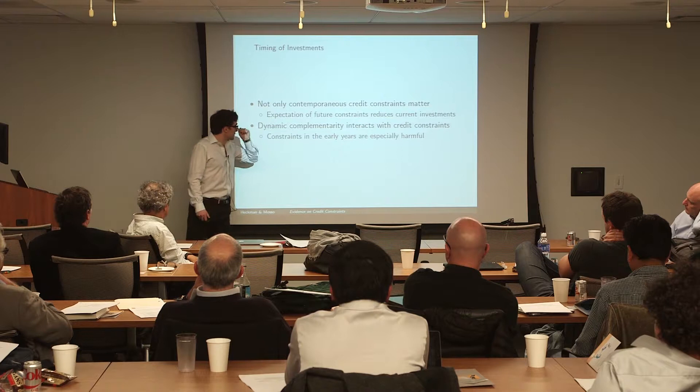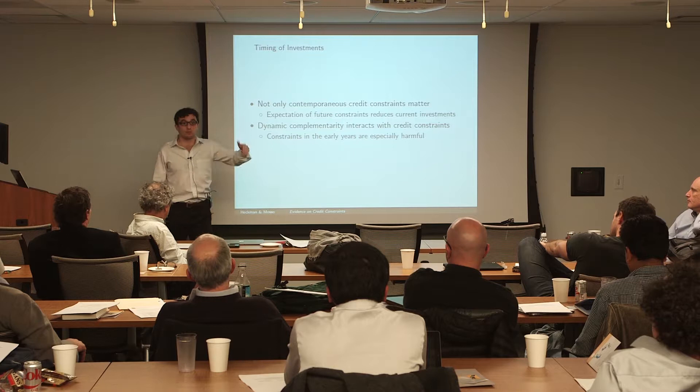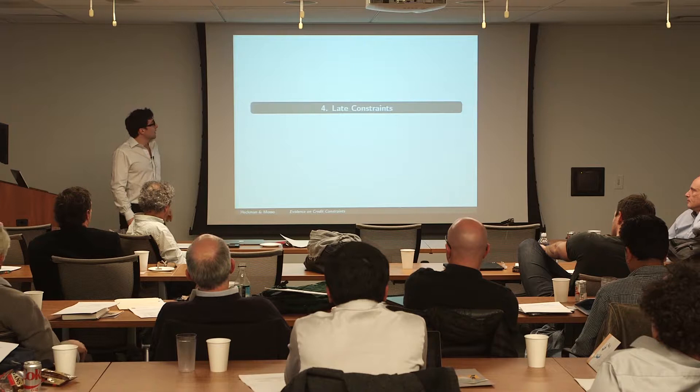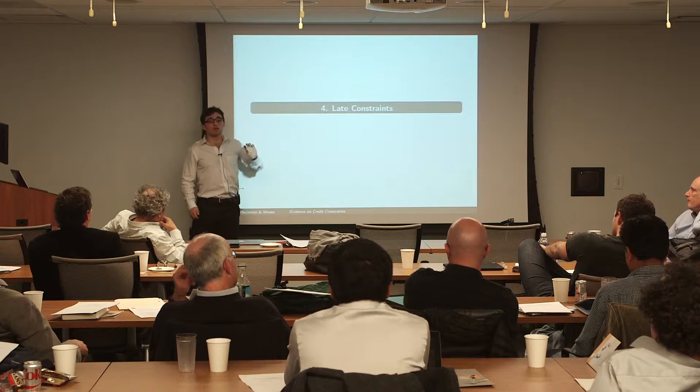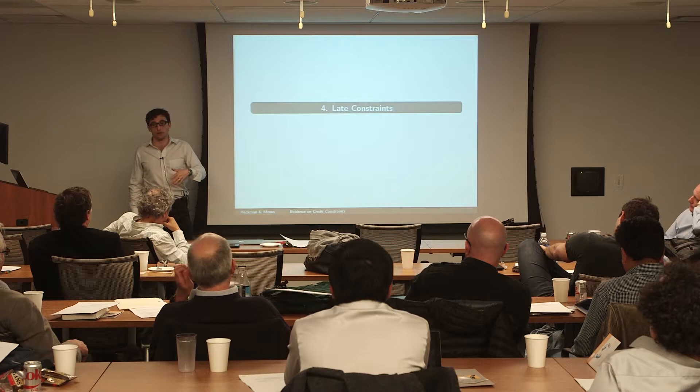Dynamic complementarity potentially interacts with credit constraints because constraints in the early years could be especially harmful if early human capital determines the productivity of future investments over the entire period of development. So I want to look at the literature on late versus early constraints — first constraints acting more or less at the college-entry level, and then papers that have looked at constraints at earlier ages.